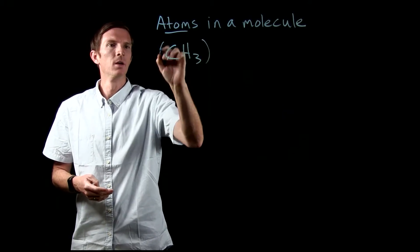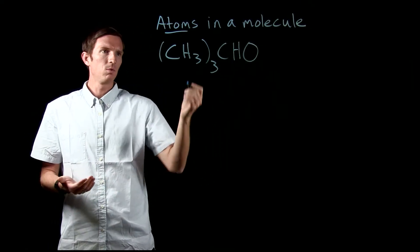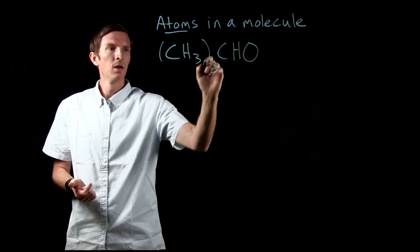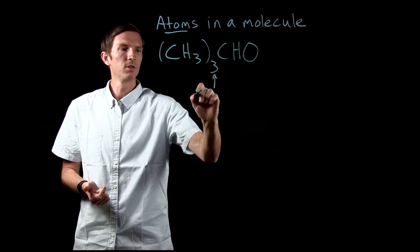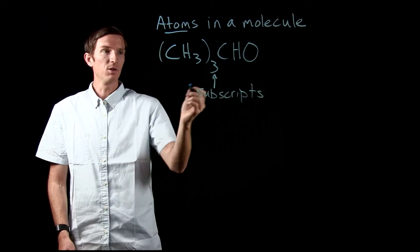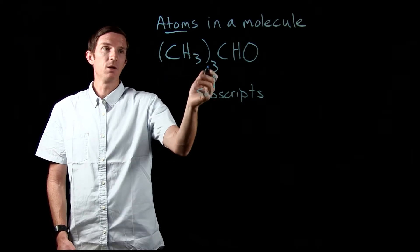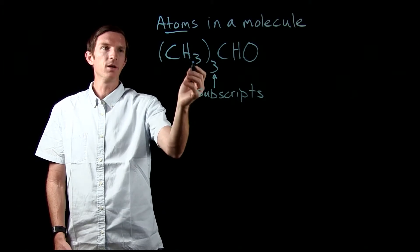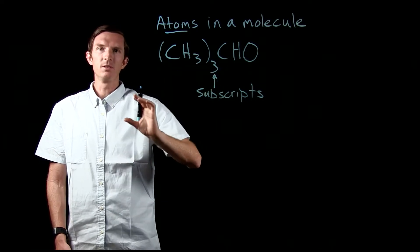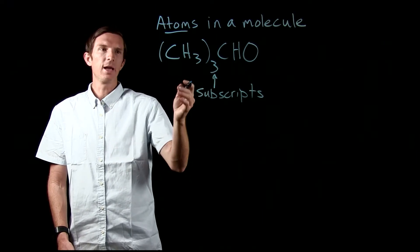We want to figure out how many atoms of each type we have. There are a couple things to take into consideration — first, our subscripts. A subscript attached to an element tells us how many of that element we have. So a subscript of three on hydrogen means there are three hydrogens. And if we have a subscript next to a parentheses, that means we have that many of everything inside those parentheses.